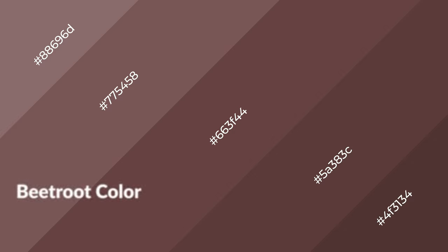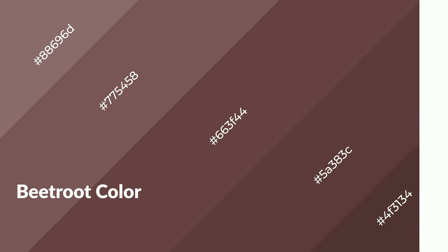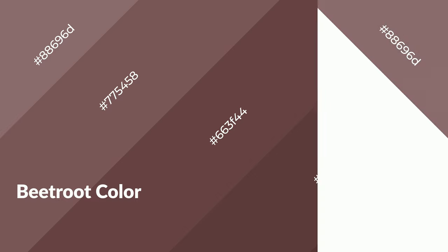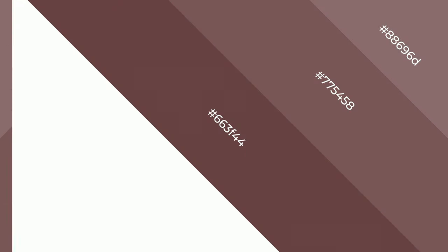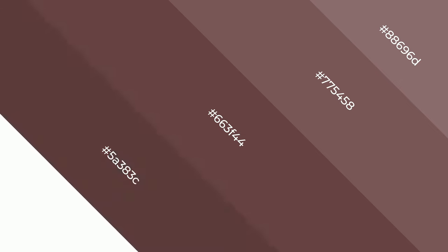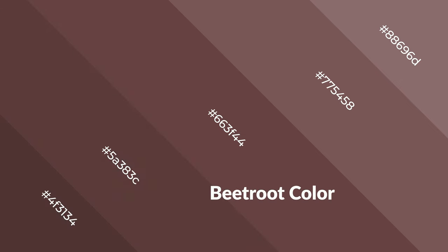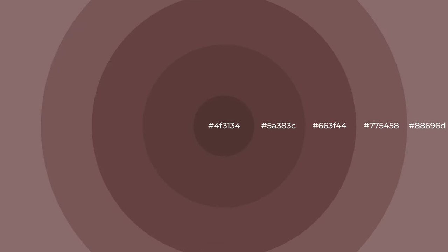Beetroot is a warm color and it emits cozier and active emotions. Warm colors are symbols of warmth, fire, heat, and sunshine. It also evokes joy, passion, love, and even anger. You can see warm colors used in restaurants and gyms.